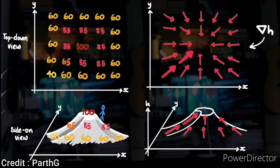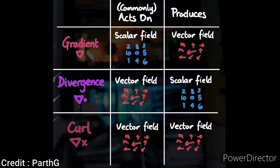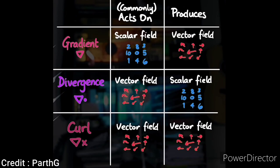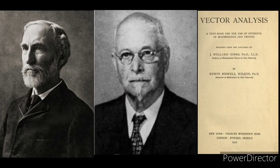The gradient operator generally operates on a scalar field. It gives us a vector field that represents the rate and direction of the fastest change of the scalar field being considered. Here is an example. Here is a quick summary of all three operators. Vector Analysis is a textbook by Edwin Bidwell Wilson, first published in 1901, based on the lectures of J. Willard Gibbs. This book standardized the notation and vocabulary of three-dimensional linear algebra and vector calculus.